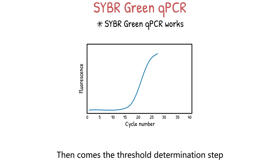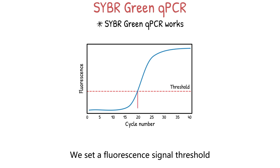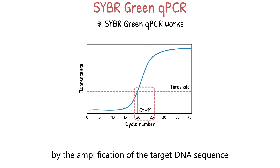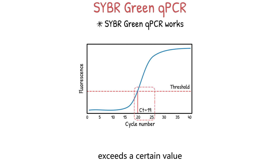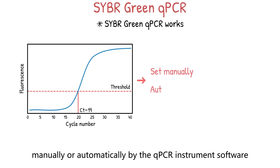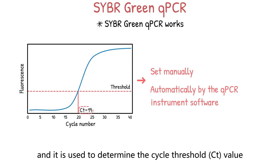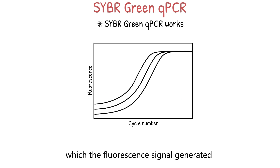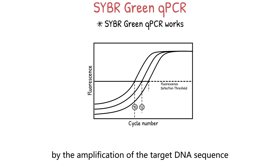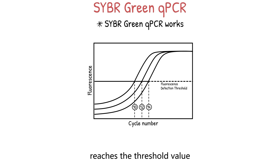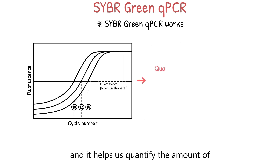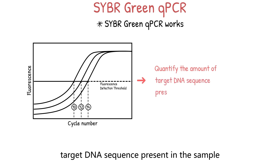Then comes the threshold determination step. We set a fluorescent signal threshold, which is the point at which the signal generated by amplification of the target DNA sequence exceeds a certain value. This threshold can be set manually or automatically by the qPCR instrument software, and it is used to determine the cycle threshold CT value — the cycle number at which the fluorescent signal reaches the threshold. We calculate this value for each well of the qPCR plate to quantify the amount of target DNA sequence present in the sample.